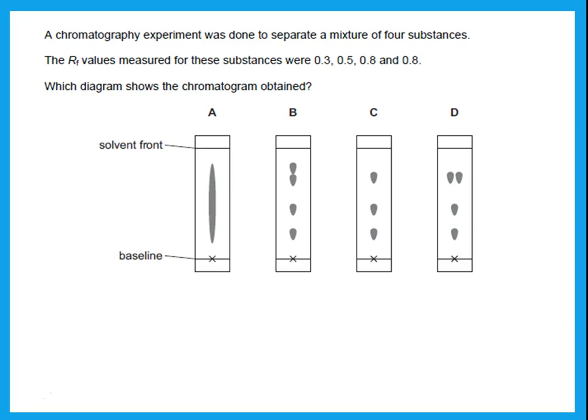A chromatography experiment separated four substances with RF values 0.3, 0.5, 0.8, and 0.8. Two substances have the same RF value (0.8), so they will appear at the same position — as one spot on the same vertical line from the sample. All spots of one sample appear on the same vertical line. The answer is C.